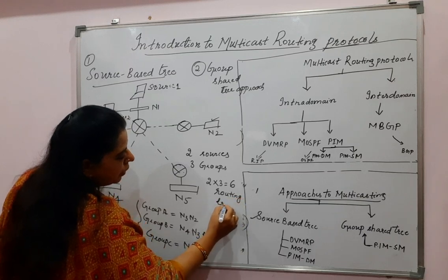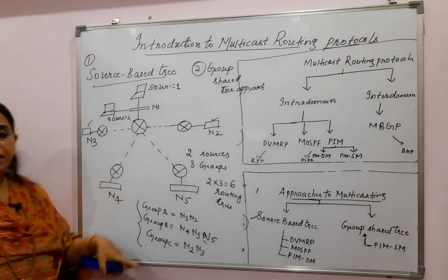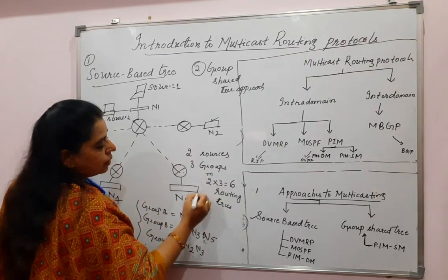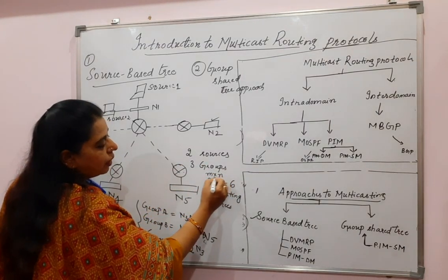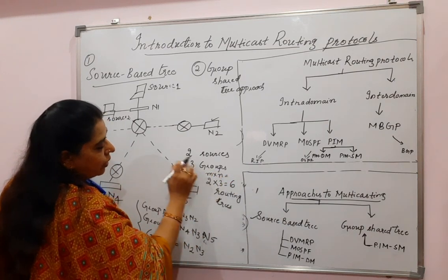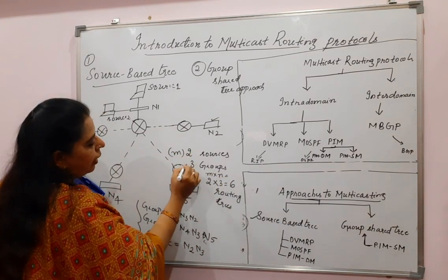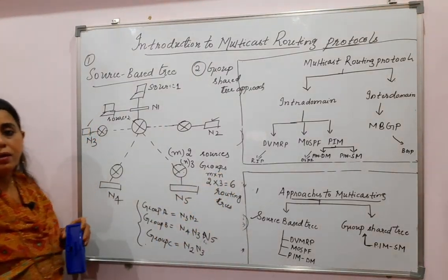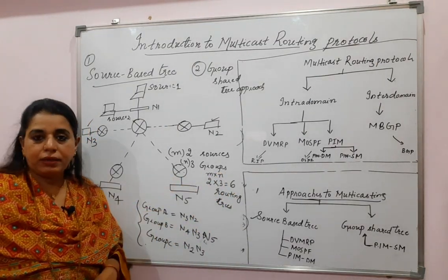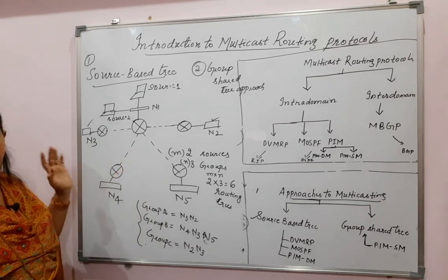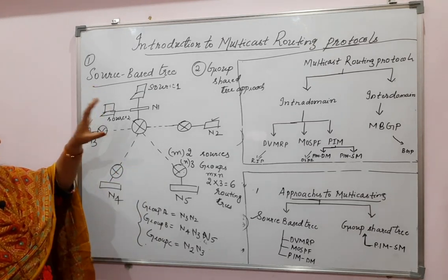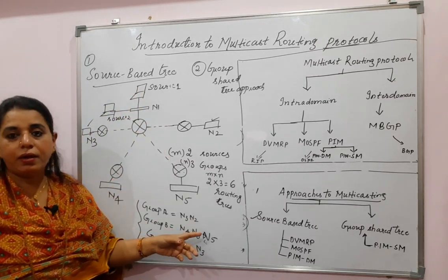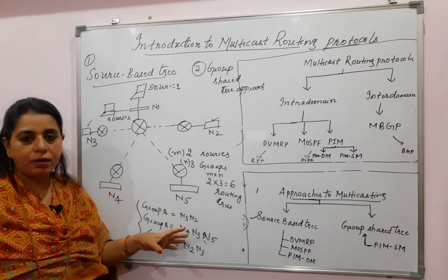Six routing trees should exist in this particular network. In general, if there are M sources and N groups, then you will have M × N routing trees in the entire internet or autonomous system. This approach is called source-based, because for every source there should be a tree to reach each particular group.